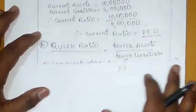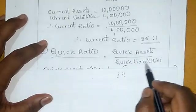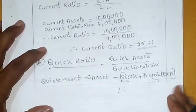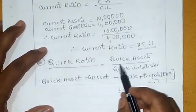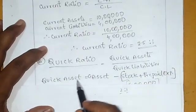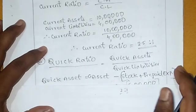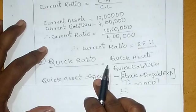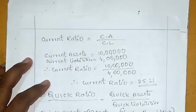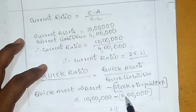Now let's calculate the quick ratio. Quick ratio = quick assets / quick liabilities. Quick assets = current assets minus stock minus prepaid expenses. Current assets are already calculated as 10 lakhs. Subtract stock: 6 lakhs.